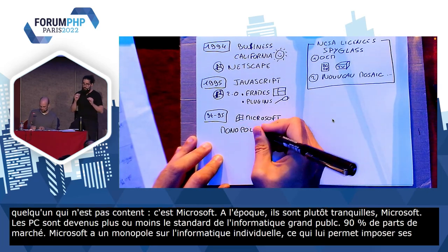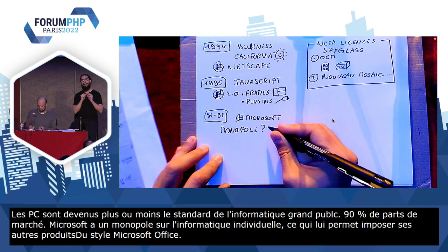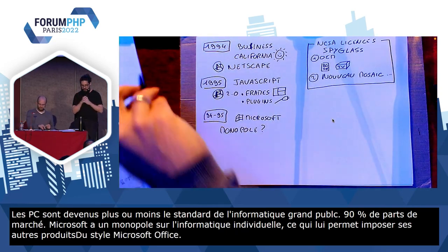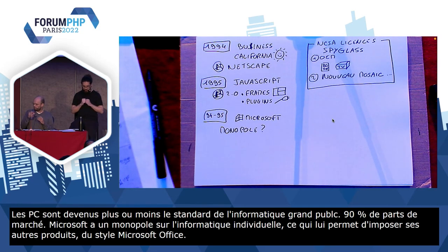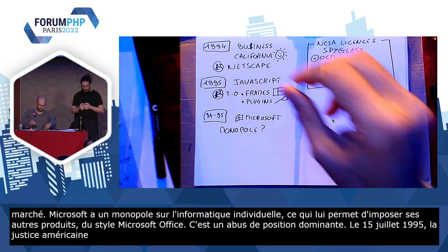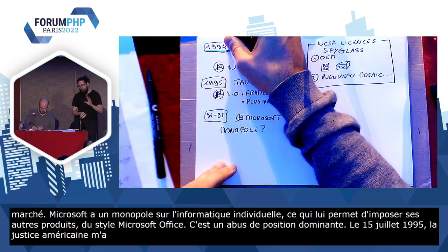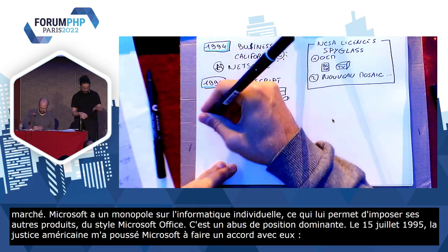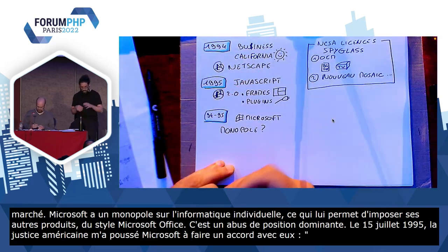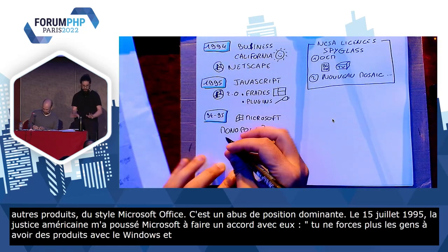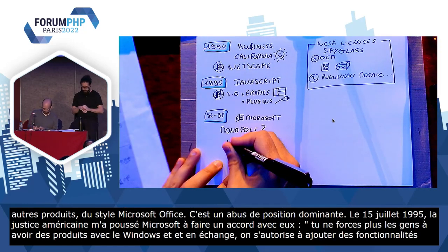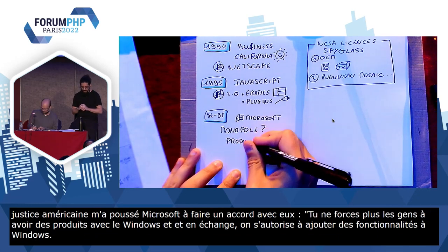Ce n'est pas super légal de faire ce genre de choses, c'est un abus de position dominante. Et donc, le 15 juillet 1995, la justice américaine, qui n'était pas très contente de tout ça, va pousser Microsoft à faire un accord avec eux : tu ne forces plus les gens à avoir des produits avec Windows. Et en échange, on t'autorise à ajouter des fonctionnalités à Windows. Du moment que c'est juste une fonctionnalité, ça ira, on ne t'embêtera pas. On verra que ça aura des petites conséquences.